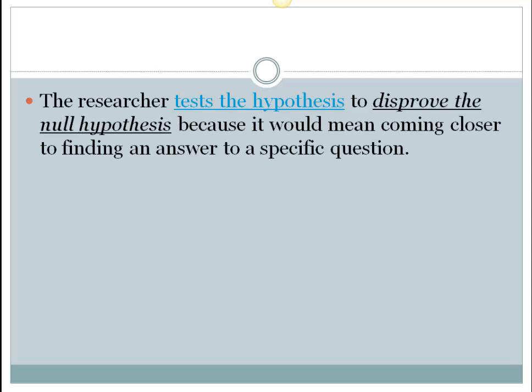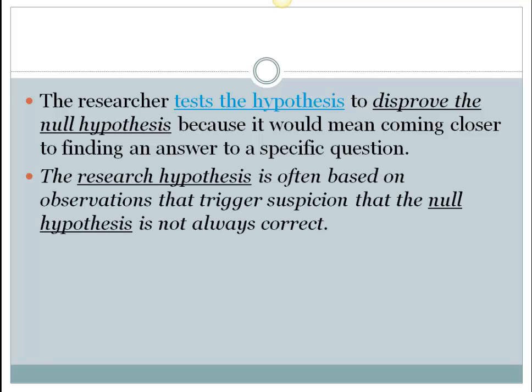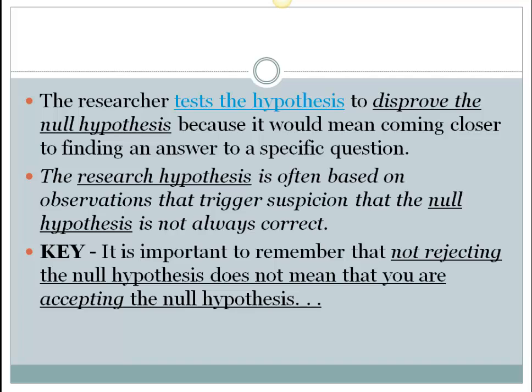The researcher, in an experiment, tests the hypothesis with an attempt to disprove the null hypothesis — finding an answer to a specific research question, or at least coming closer to understanding how variables affect each other. The research hypothesis is typically based on researcher observations that trigger the suspicion the null may not be true. When we don't reject the null, it doesn't mean we're accepting it. The null is valid unless falsified. The experiment can either reject the null if the research hypothesis has support, or we can fail to reject the null — meaning we just haven't found a difference yet.